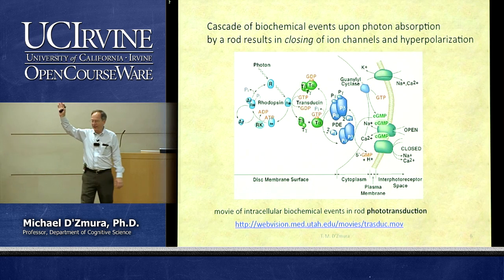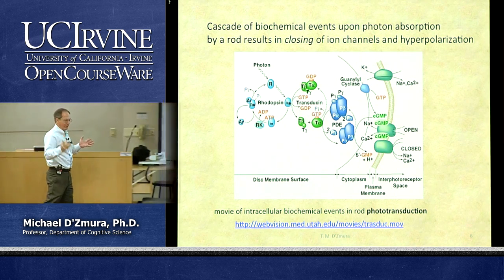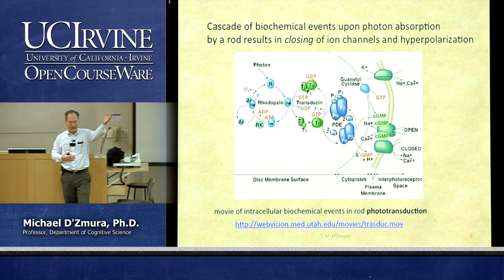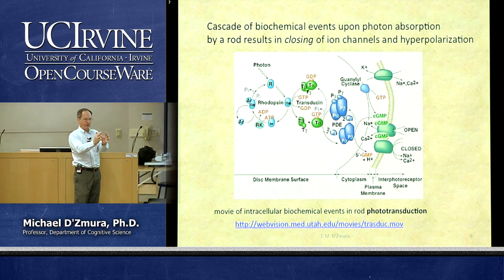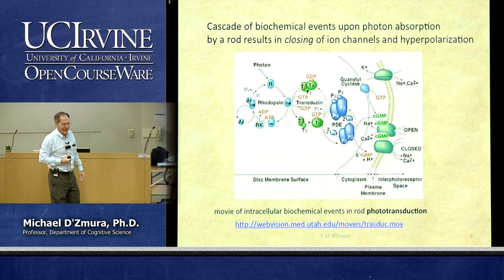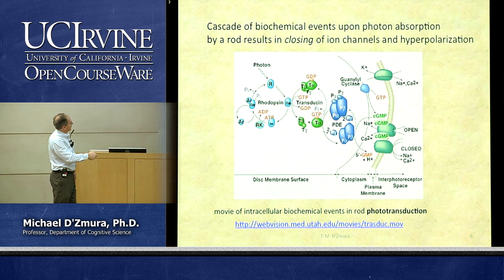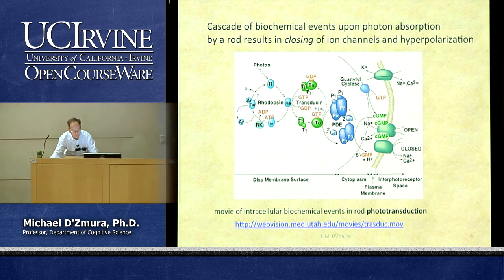Normally there's an excess of positive ions outside. If we open ion channels, the positive ions go in. If we close those channels, pumps push the positive ions back out. There's effectively a link between the absorption of a photon and these ion channels. We have a movie that shows this nicely.